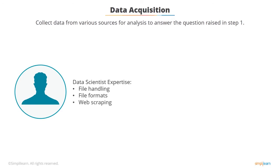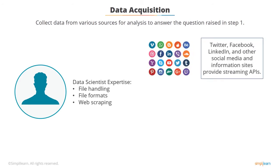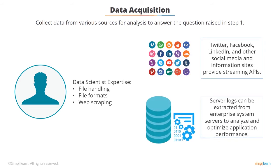Web scraping is a popular way to extract information from the web. A lot of information sites provide streaming APIs — such as Twitter, Facebook, LinkedIn, and other major social media and information companies. Server logs can also be extracted from enterprise system servers to analyze application performance and optimize the overall process.